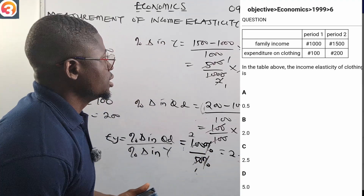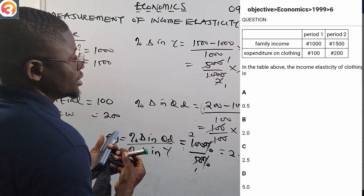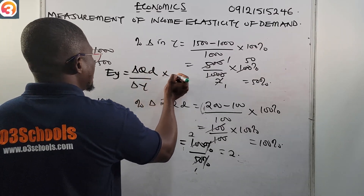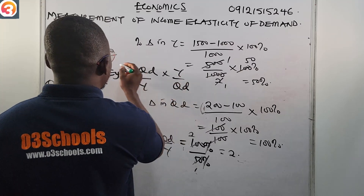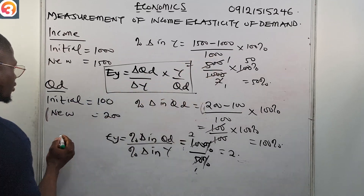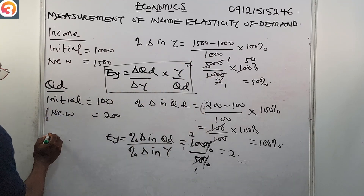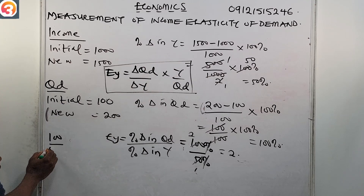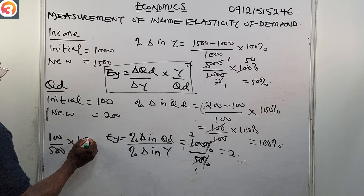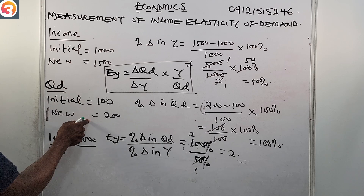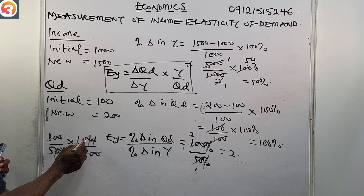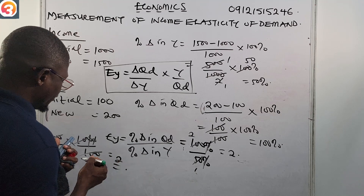Let us also verify with the shortcut formula. EY equals change in QD over change in Y, times initial Y over initial QD. Change in QD is 100; change in Y is 500; initial Y is 1,000; initial QD is 100. So: 100 over 500, times 1,000 over 100. The 100s cancel and 1,000 over 500 gives 2. Correct again — the shortcut formula confirms the answer.